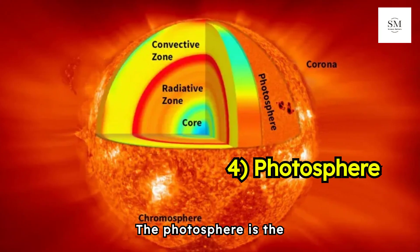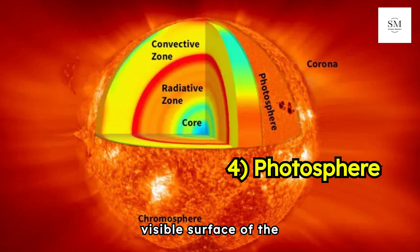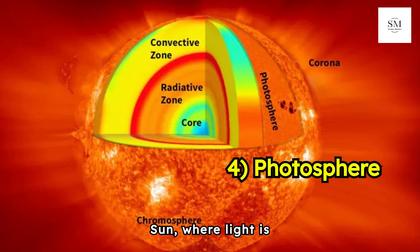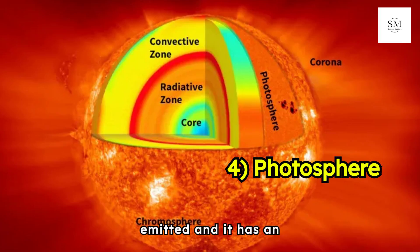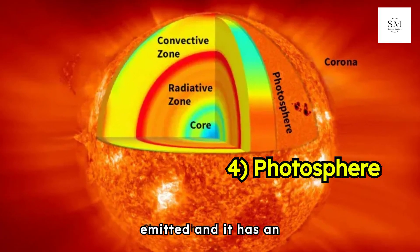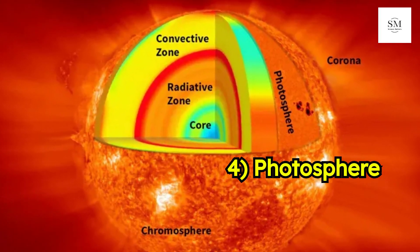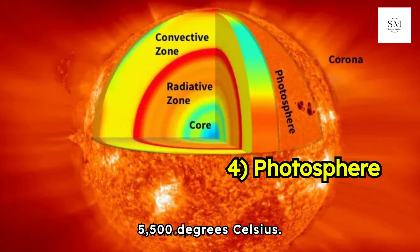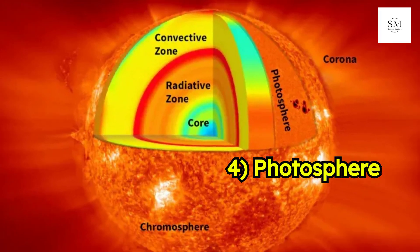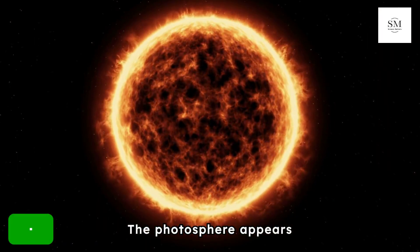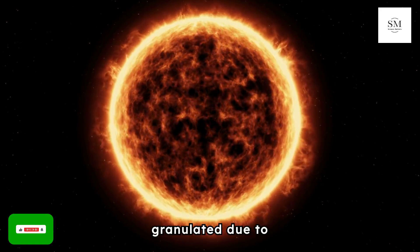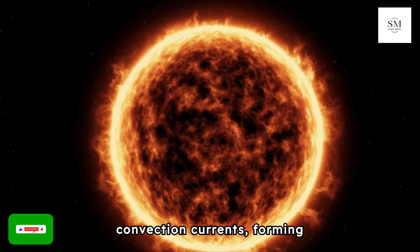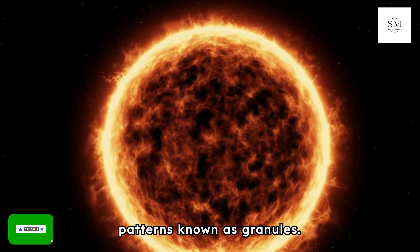The photosphere is the visible surface of the Sun, where light is emitted, and it has an average temperature of about 5,500 degrees Celsius. The photosphere appears granulated due to convection currents, forming patterns known as granules.